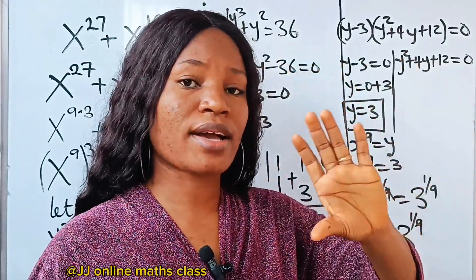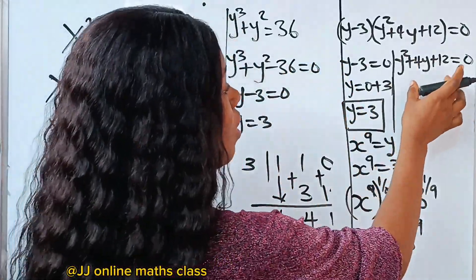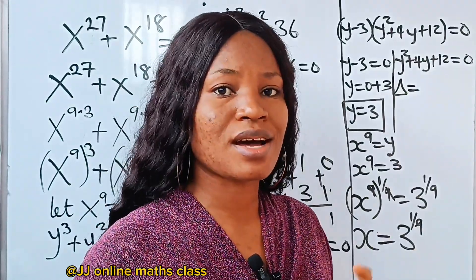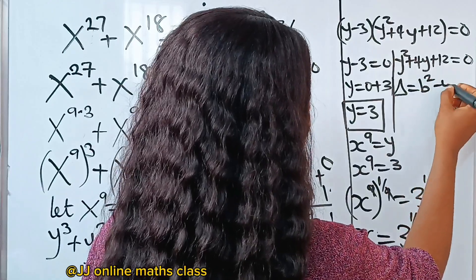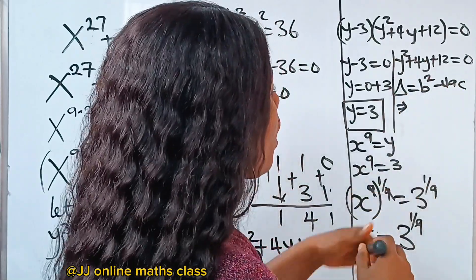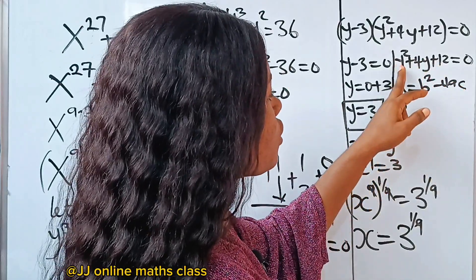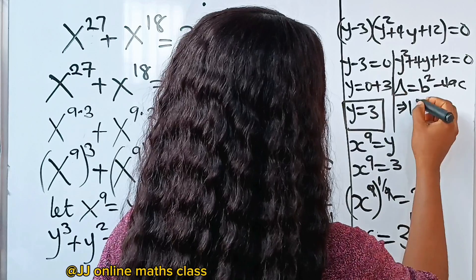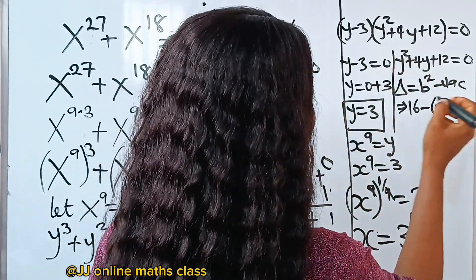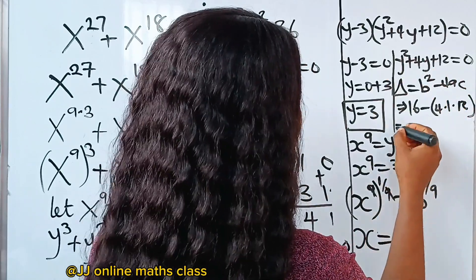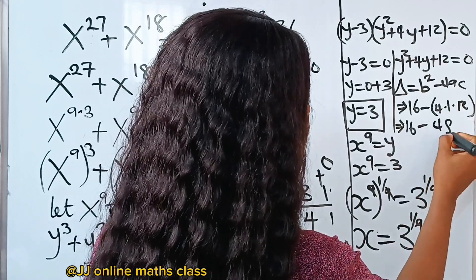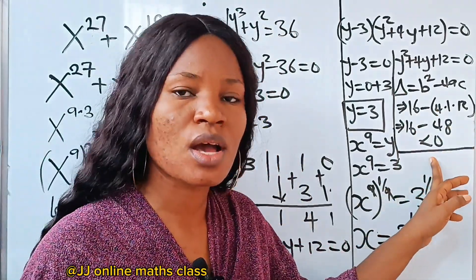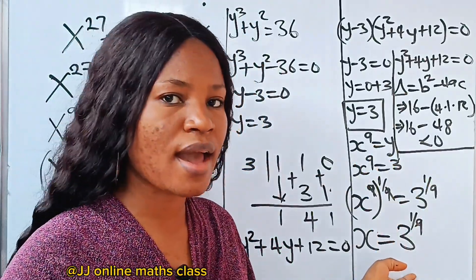Recall that we are told x has to be real, not complex. To check if we can get real roots from the quadratic side of the equation, we check if the discriminant b squared minus 4ac is greater than or less than 0. Our b is 4, a is 1, and c is 12. So 4 squared gives us 16, minus 4 times 1 times 12 gives us 48. So 16 minus 48 is less than 0, which shows this side gives us complex roots. So the only real root for x is 3 to the power of 1 over 9.